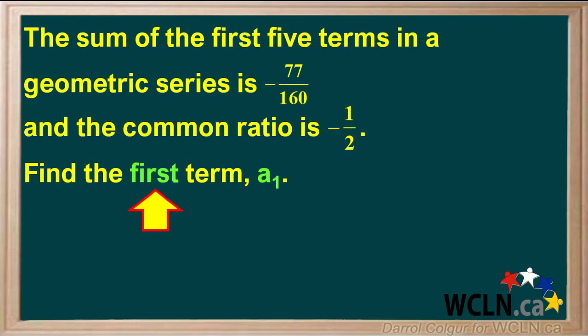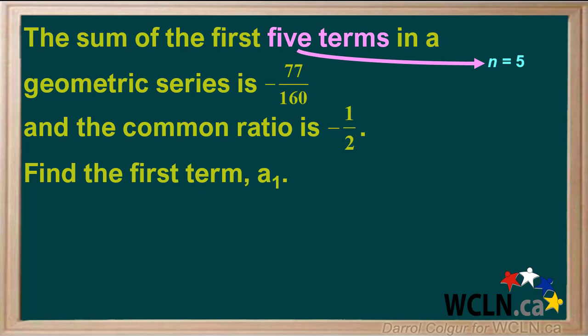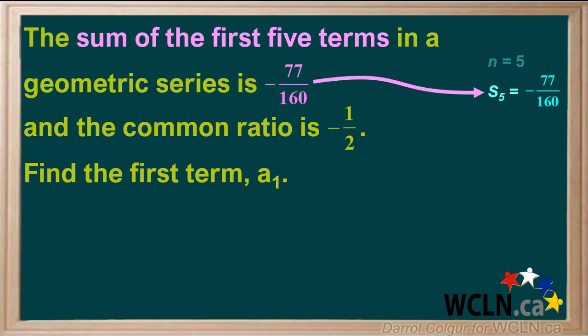We're given that the sum of the first five terms in a geometric series is negative 77 over 160, the common ratio is negative one-half, and we're asked to find the first term, a1. We know that n equals 5, S5 equals negative 77 over 160, and r equals negative one-half.